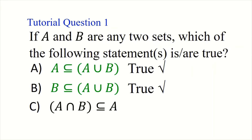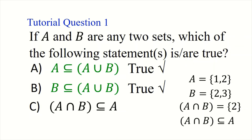Now let's take a look at the next option. A intersection B means the set of X such that X is in A and also in B. If that is the case, then every element in A intersection B is in both A and B, so A intersection B will always be a subset of A.